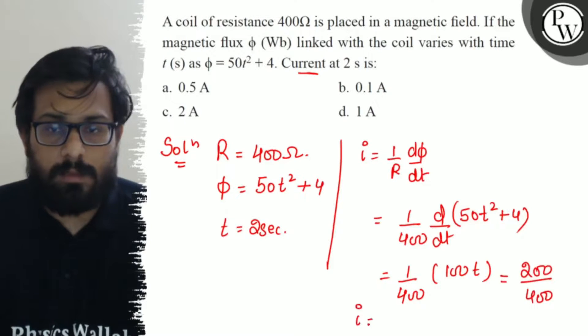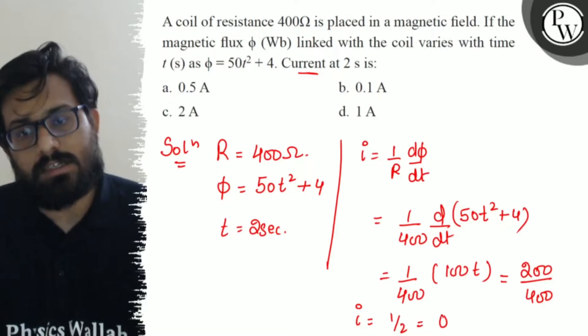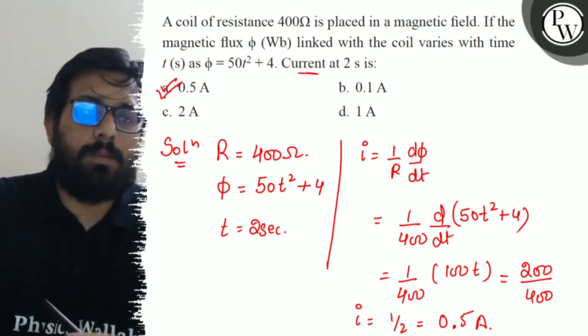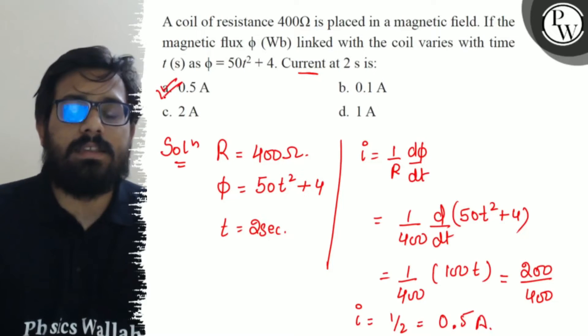The current value is 1 by 2 or 0.5 ampere. So 0.5 ampere is option A, and this is the right answer.